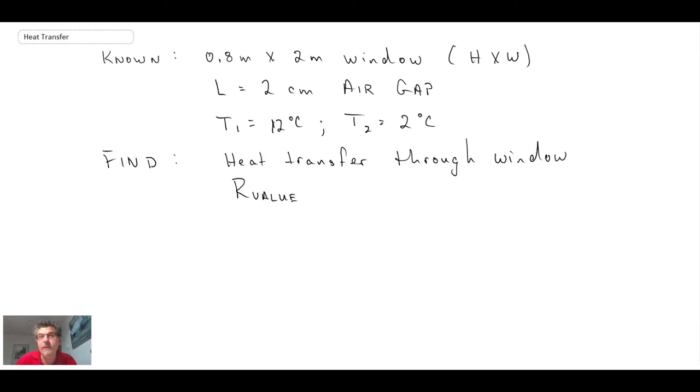So to begin this problem, what we're going to do is get the properties. And the properties for this, we're going to be using one of the correlations for natural convection in vertical cavities. And for those, the properties were evaluated at the average temperature.